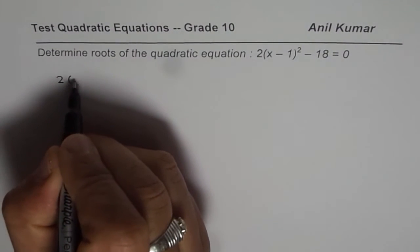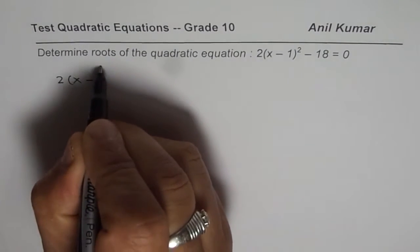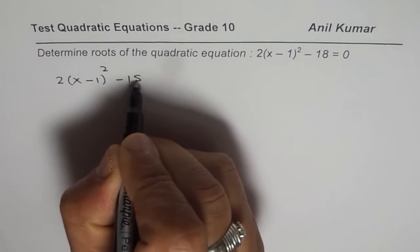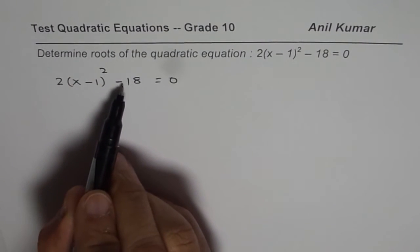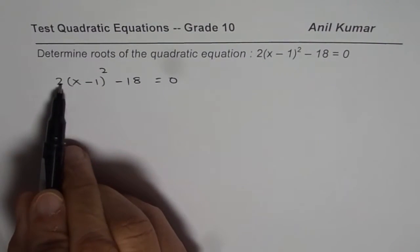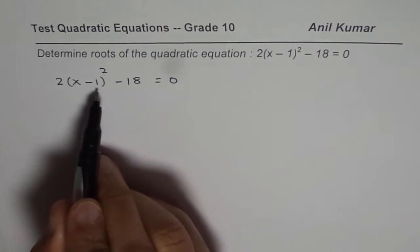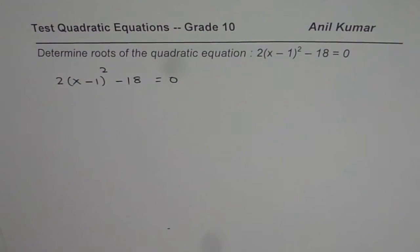We have 2 times x minus 1 whole square minus 18 equals to 0. Now the strategy here is, we will take 18 to the right side, divide by 2, square root and add 1. So these are the steps to be followed. You can actually pause the video, follow these steps, get the answer and check with my solution.